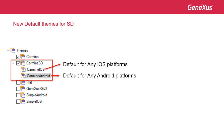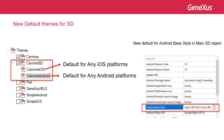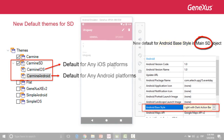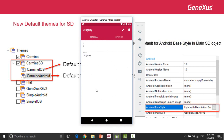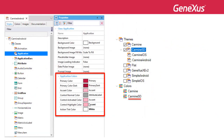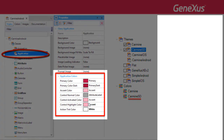As of upgrade 6 of GeneXus 15, there is a new theme, Carmine SD, with two sub-themes — Carmine iOS and Carmine Android — that will be the default values for those platforms. Additionally, for Android, the default value of the property AndroidBaseStyle has been changed to LightWithDarkActionBar. This property corresponds to the main object of the SD app. Our applications must abide by the Android and iOS design guides.